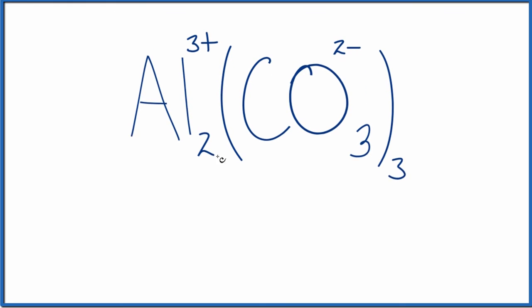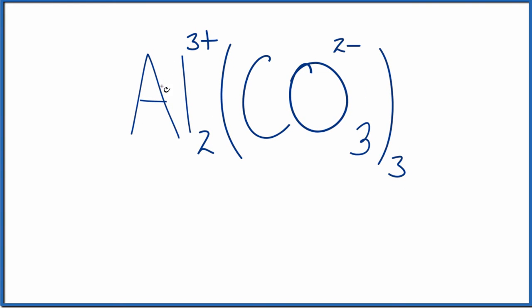When we write the ions, we have two aluminum ions. So 2, that Al3 plus. Then we have three of these carbonate ions here. So three of the CO3, and each one is 2 minus.